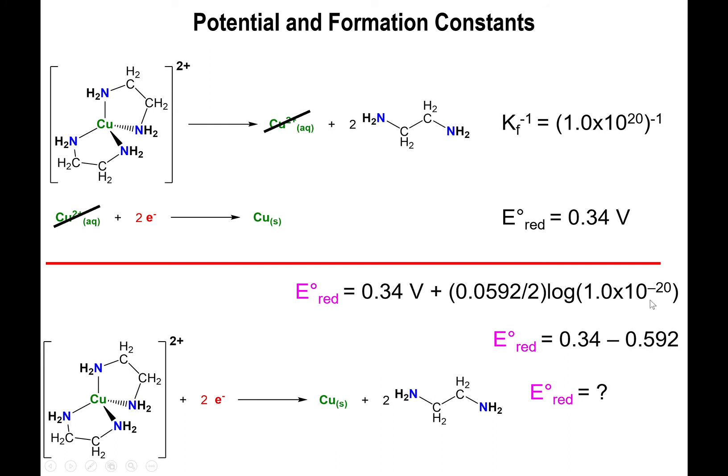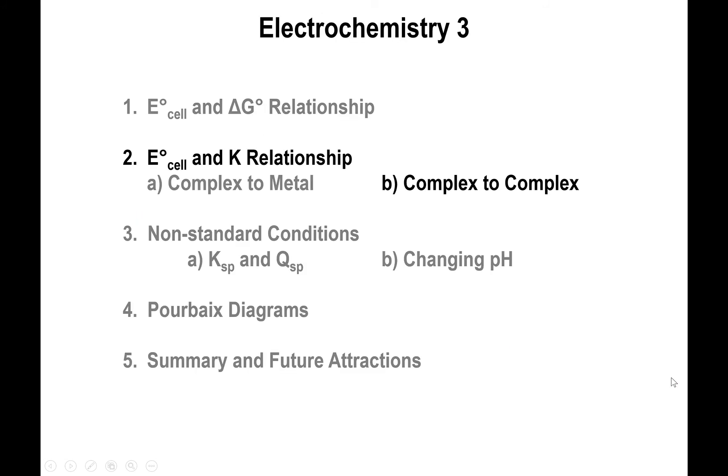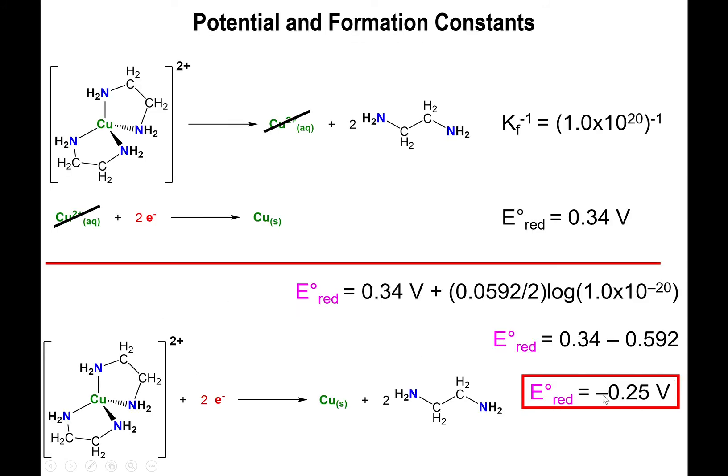So take the log of 10^-20, you'll find out that's -20. Multiply by 0.0592 and divide by 2, you'll find out that the value is -0.592. And what that means is that the potential, the reduction potential is now going to be -0.25 volts.